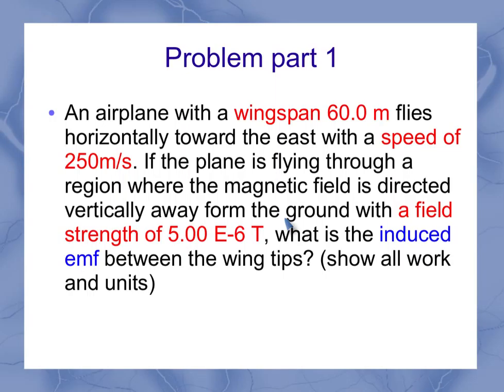Going back to the problem again, I've highlighted a few things here. That length is your wingspan, and that's 60 meters. Your velocity is your speed of 250 meters per second. And the field strength that you need to use is 5.0 e to the minus 6 Tesla. And what you're solving for is the induced EMF.